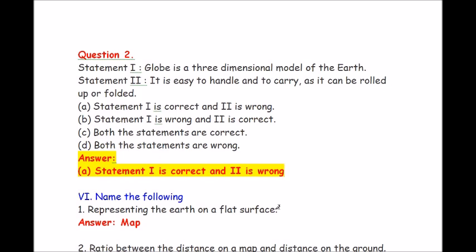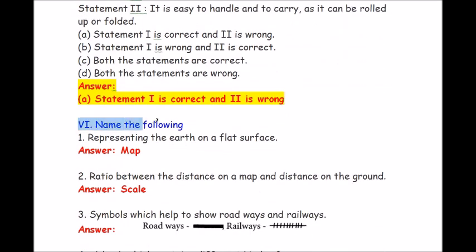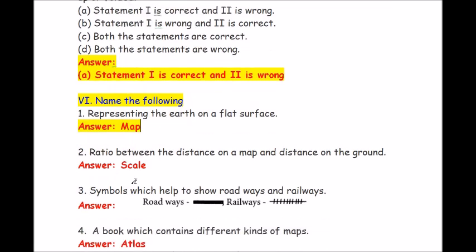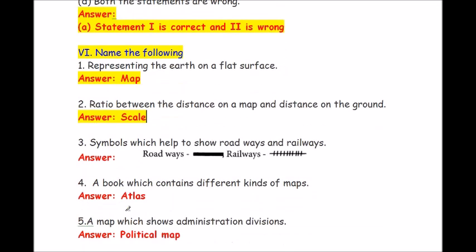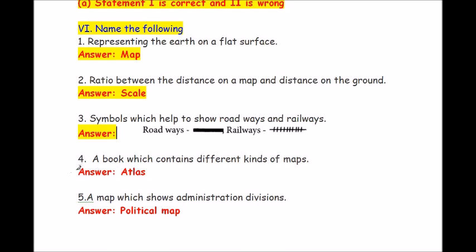Roman number 6, name the following. Question 1: representing the earth on a flat surface. Answer is map. Question 2: ratio between the distance on a map and distance on the ground. Answer is scale. Question 4: a book which contains different kinds of maps. Answer is atlas.